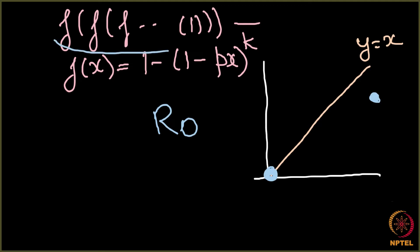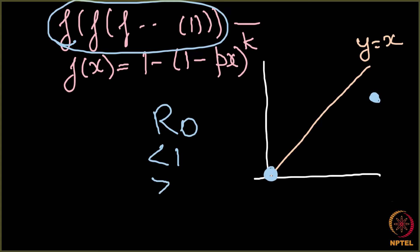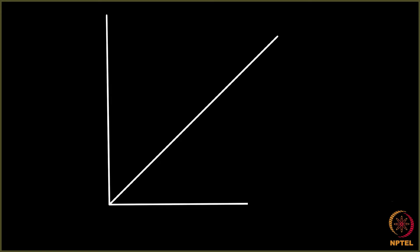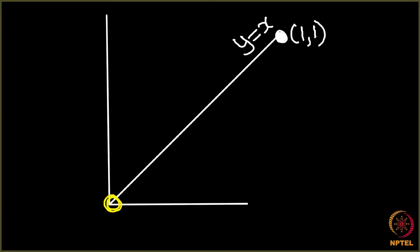Now, let's see how we are going to find out this value of q*, which is f(f(f(...(1)...))) applied infinite times, when our R0 is less than 1 and when our R0 is greater than 1. One point is somewhere here which is less than 1. And then let's look at the first case.